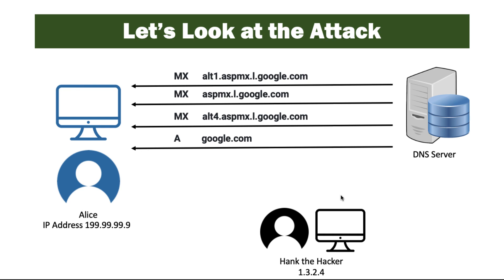In this case, we see three MX records, which are mail exchange, and an A record. There can be a lot of records. The request that Hank initially sends over could be very small, maybe two or three bytes, but the response back could be 300 or 400 times that big.